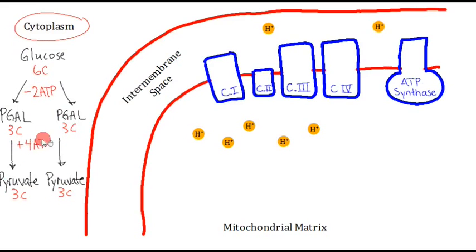In this step, we're producing four ATP. It also releases some extra electrons — there are electrons present in the PGAL molecules that aren't required to produce the pyruvate molecules. Those extra electrons are captured by a molecule called NADH. ATP is an energy-carrying molecule, and NADH is an electron-carrying molecule. We'll see how these are important as we move through the process.